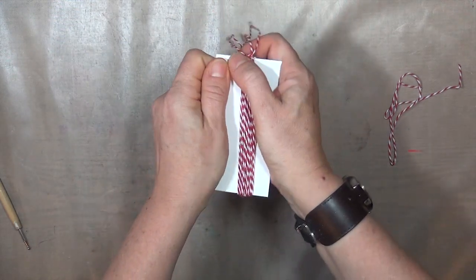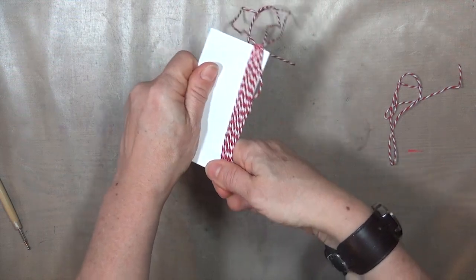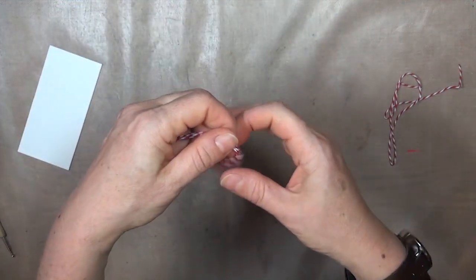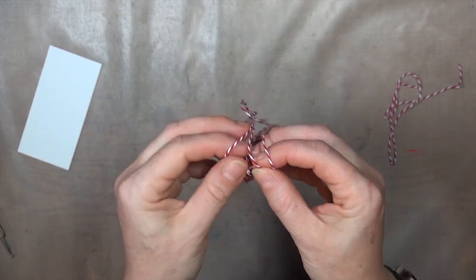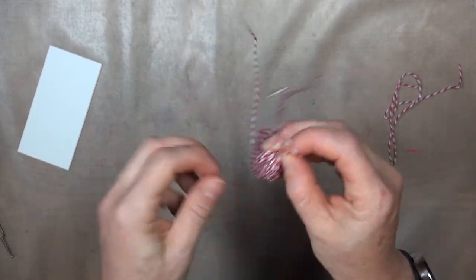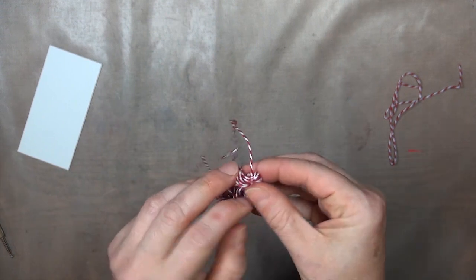Once that's tied tightly, you can go ahead and slide the tassel off of the template over to the side, then take a minute to make sure that the knot is centered around the bundle and that the strands are straightened out and laying nicely together.